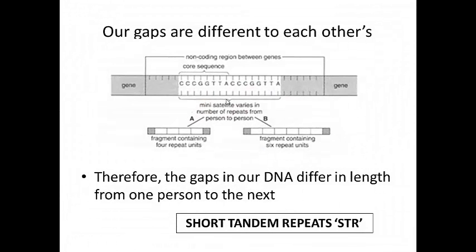So we have gaps between our genes and gaps within our genes. Going back to those gaps between our genes — those gaps differ from person to person. We have these structures called short tandem repeats, or STRs. This is a core sequence: C-C-C-G-G-T-T-A. That core sequence is sometimes repeated, giving a tandem repeat — so you might get in one person a fragment containing four tandem repeats, and another person a fragment containing six. There is no selection pressure on the number of tandem repeats, because they're between genes and have no obvious biological function, perhaps other than to mop up mutations. Therefore, natural selection doesn't weed them out, and mutations which occur to them aren't weeded out either.